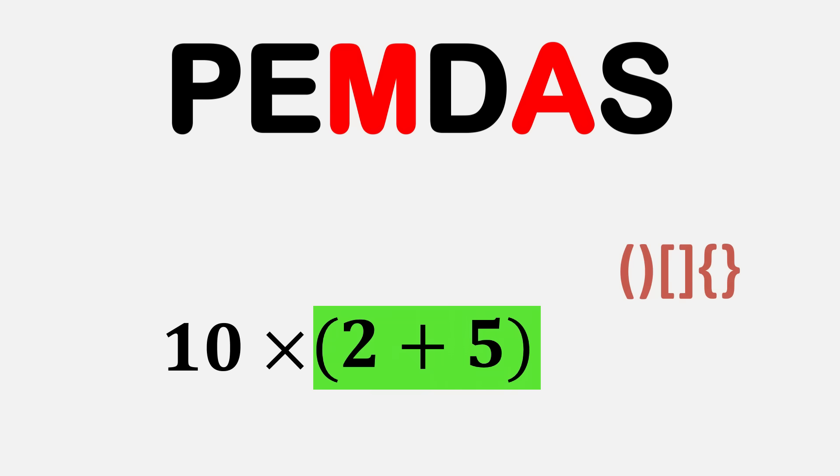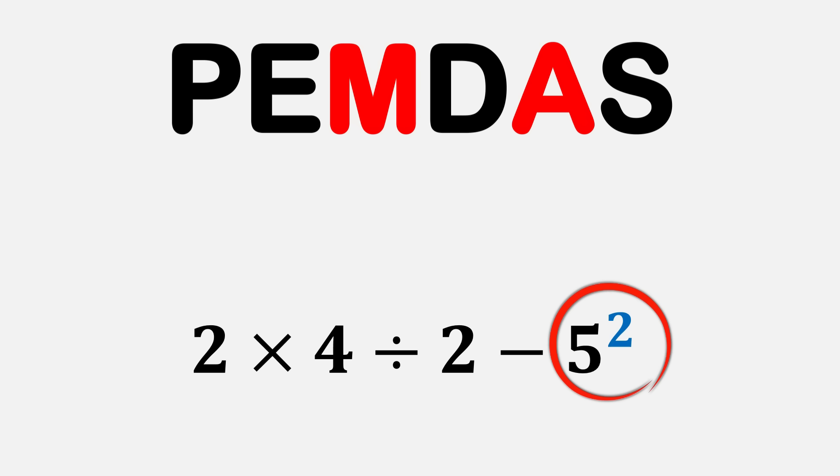Let's go over each part clearly. Parentheses always come first. If something is grouped using brackets or round symbols, you must solve that part completely before touching anything else. Next come exponents—these are powers. For example, 5 raised to the power of 2, which means 5 multiplied by 5. If you see any powers in the problem, you handle them after completing all the parentheses.